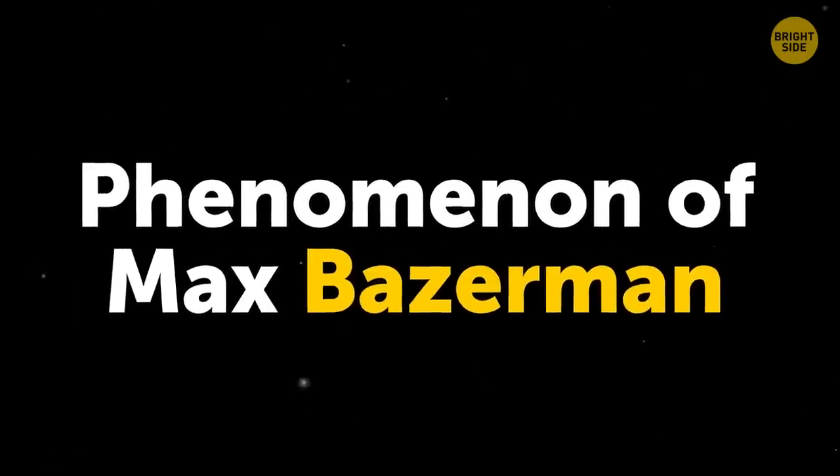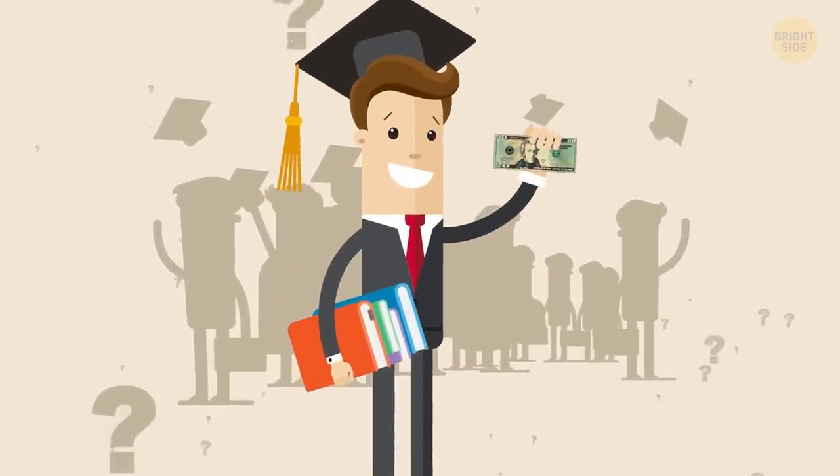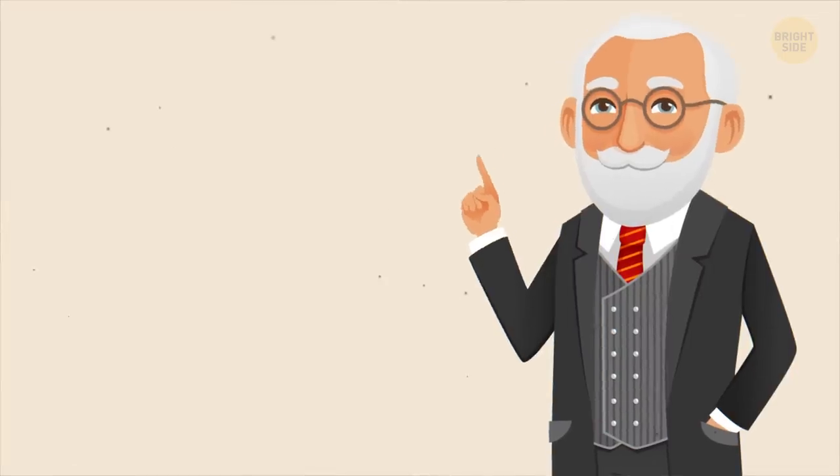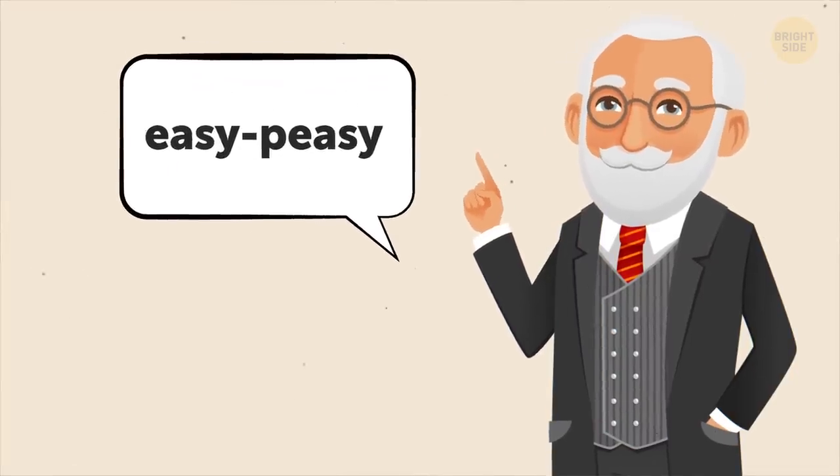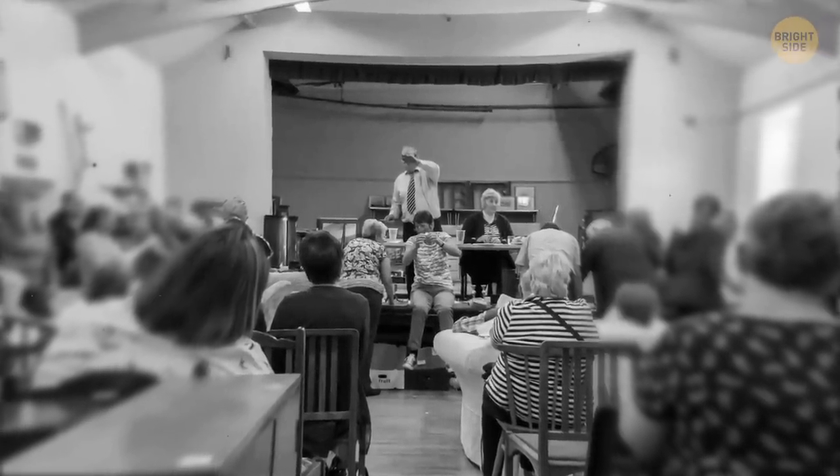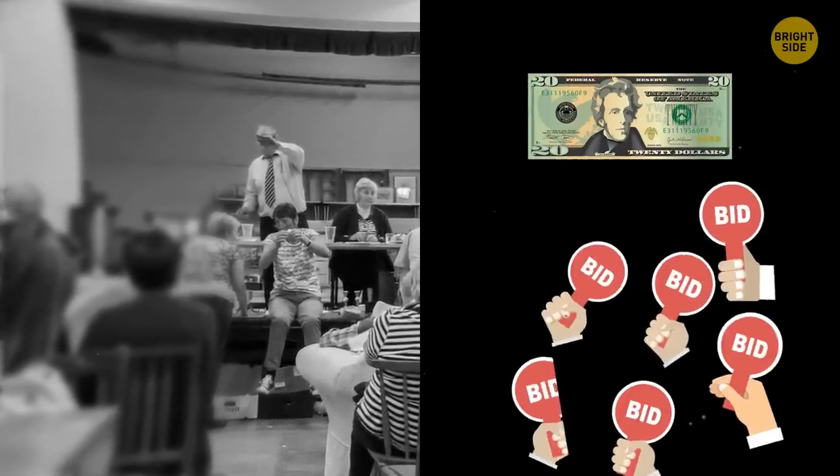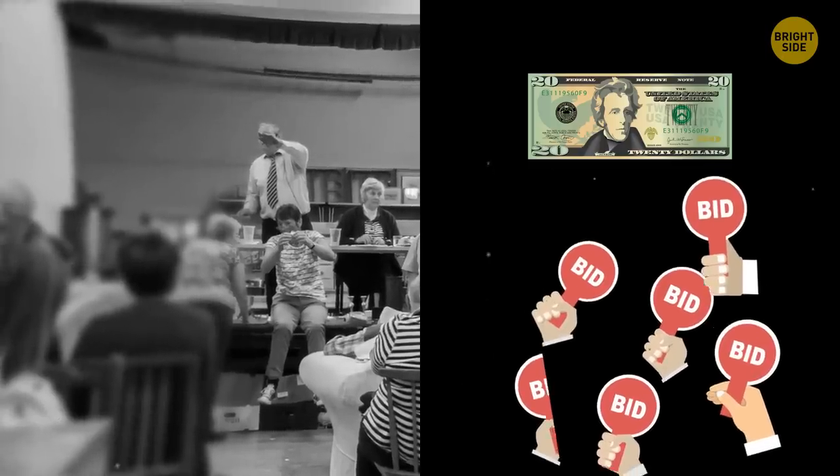Phenomenon of Max Bazerman. How hard could it be to take 20 bucks from an MBA student? In fact, Professor Max Bazerman proves it's easy-peasy. In 2010, he first conducted an experiment at his class where he organized a simple auction. He would give a $20 bill to the student who pays the most for it. The bidding started at $1.